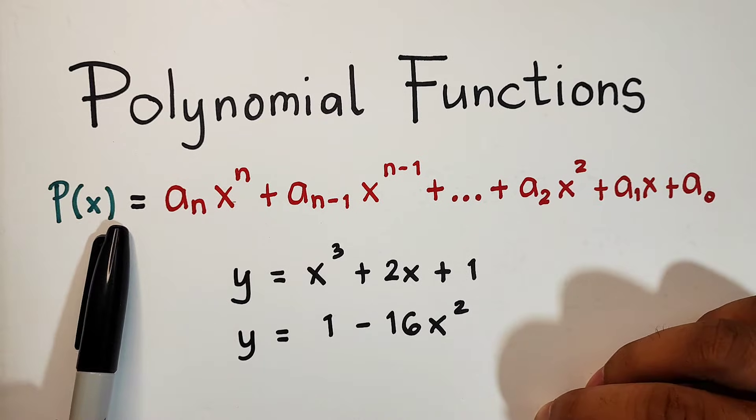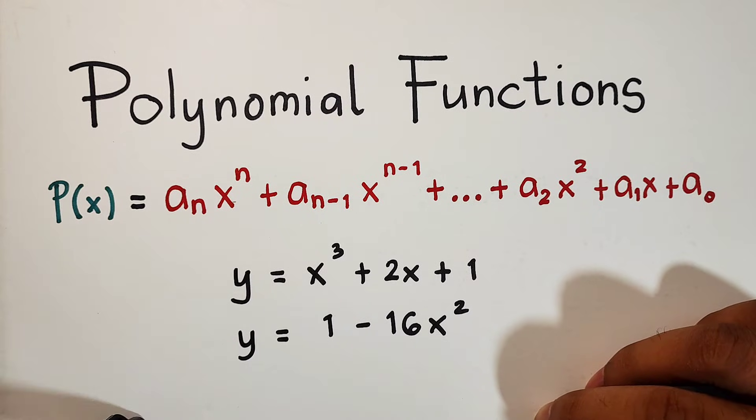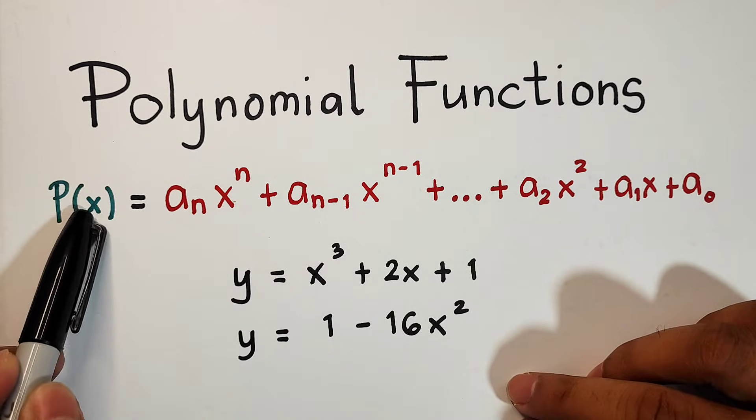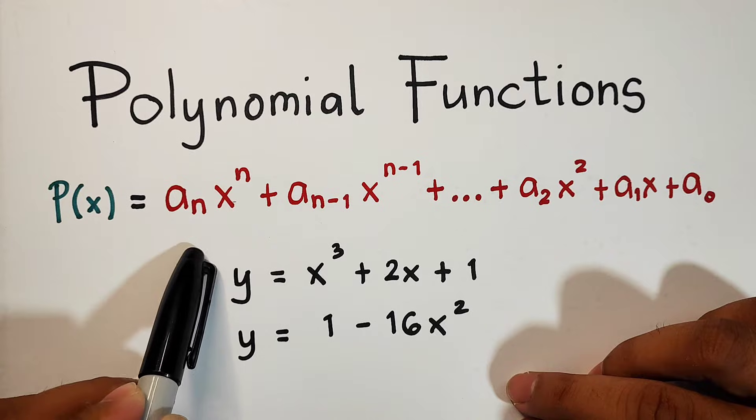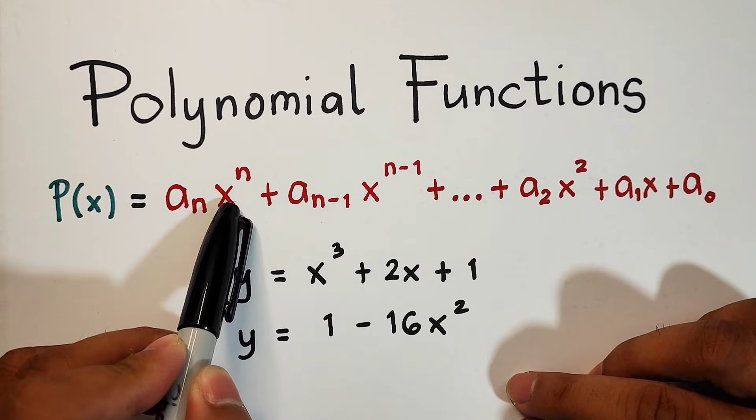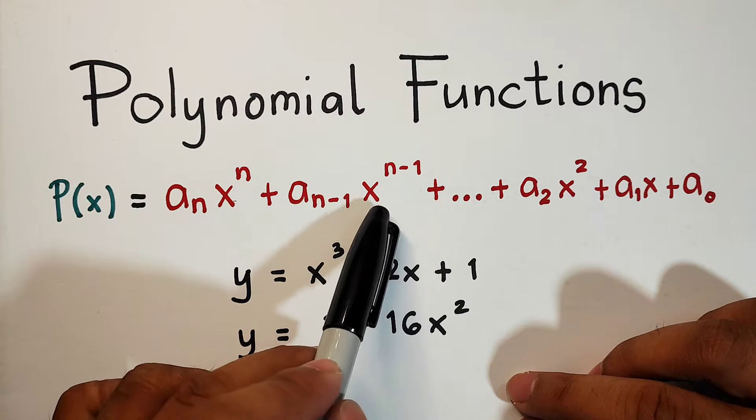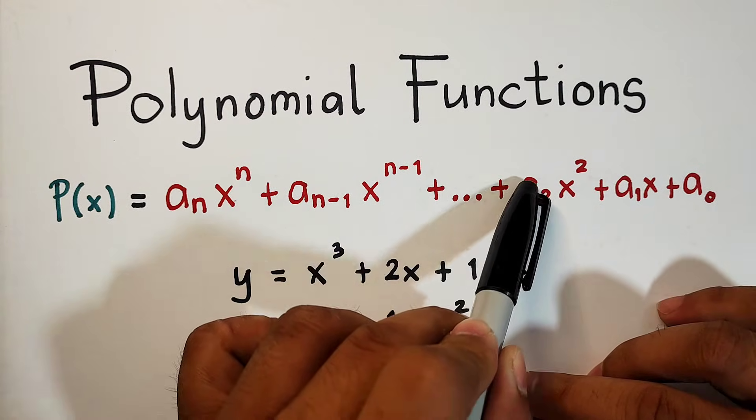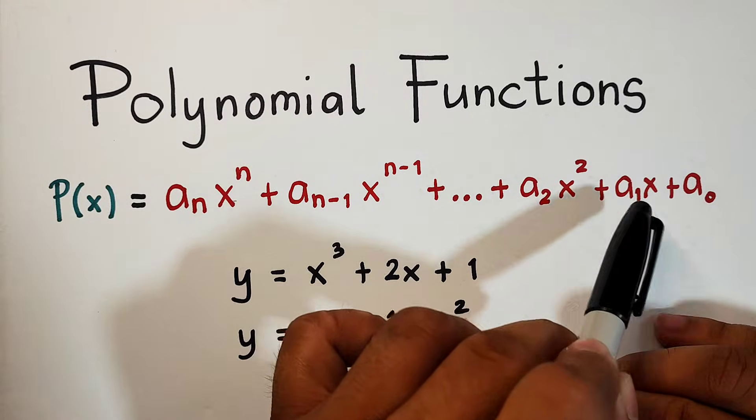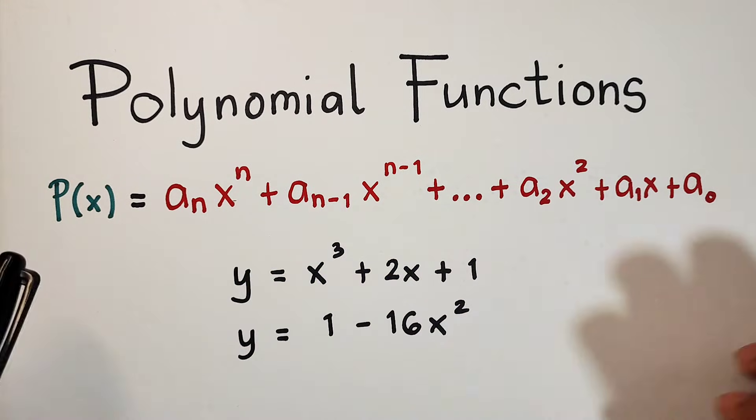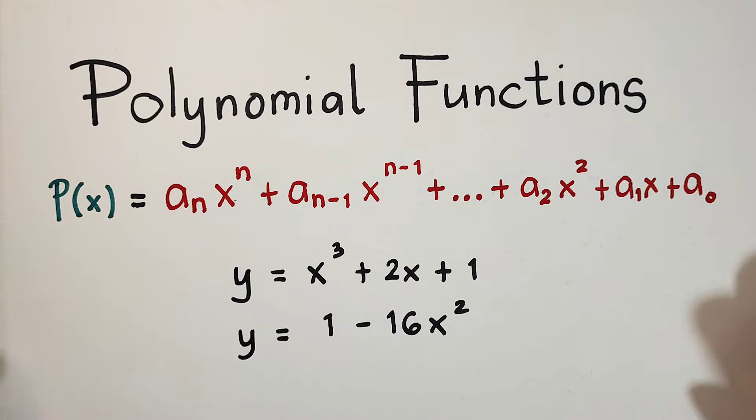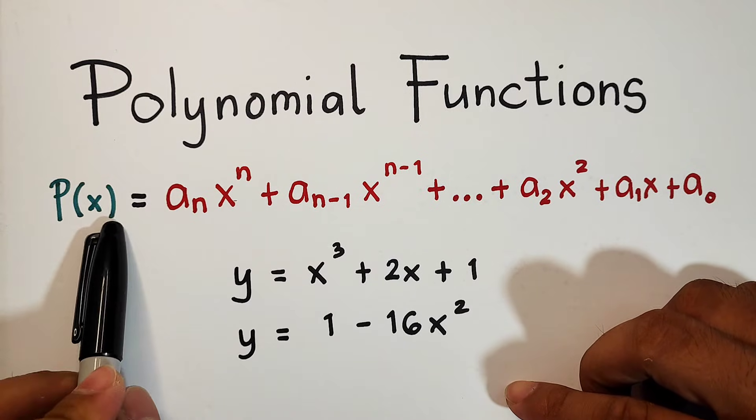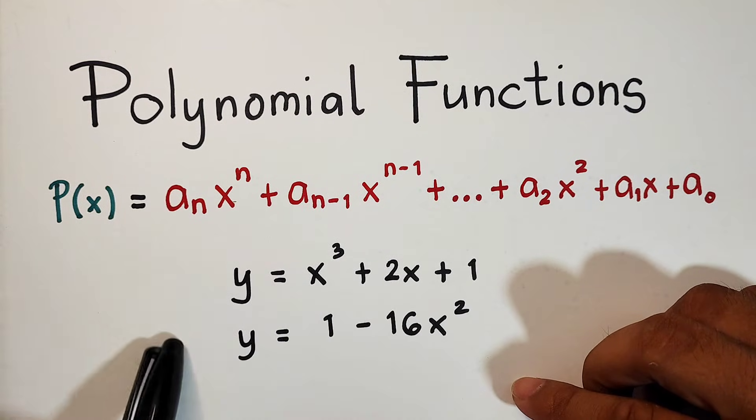So this one is the general form of a polynomial function. We have p of x is equal to a sub n x raised to n plus a sub n minus 1 x raised to n minus 1 plus dot dot dot plus a sub 2 x raised to 2 plus a sub 1 x plus a sub 0. These are the terms and we will talk about polynomial function with respect to variable x.